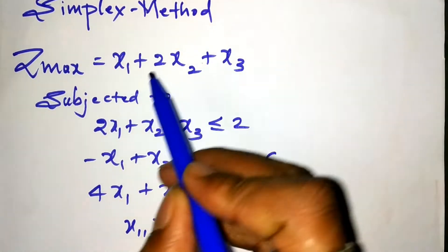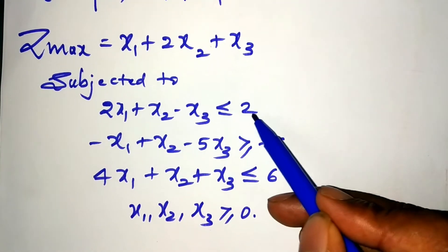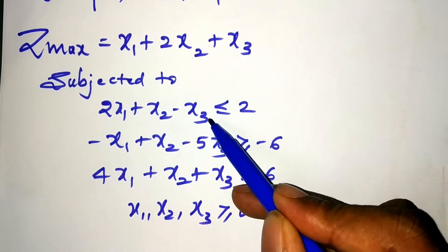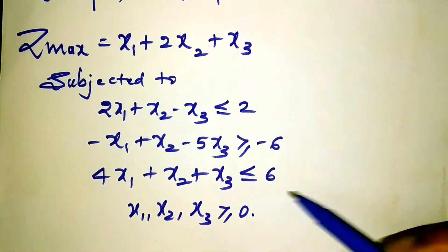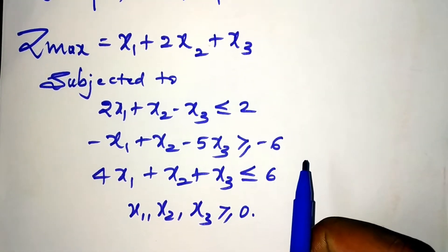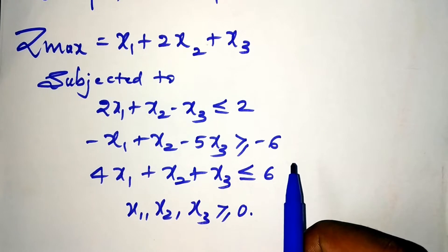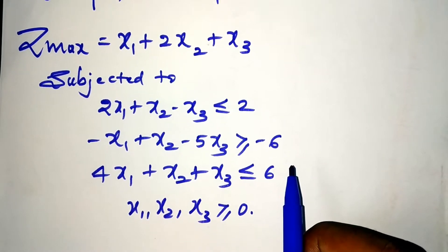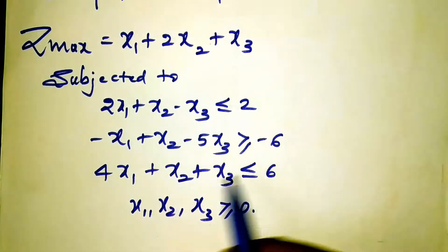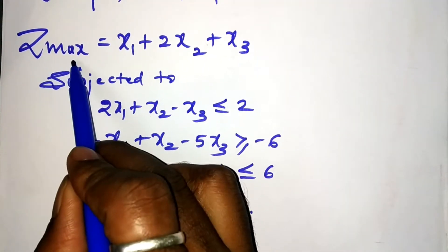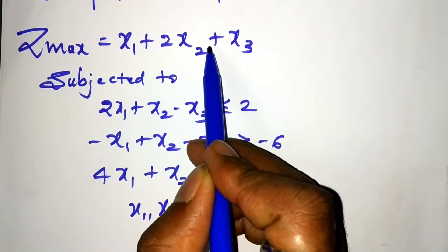So Z-max is equal to x1 plus 2x2 plus x3, and these are the three constraints. The first step in the simplex method is to convert this problem into standard form. Since the problem is already given as a Z-max (maximize) function, no need to convert this.